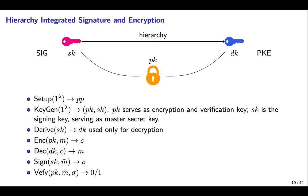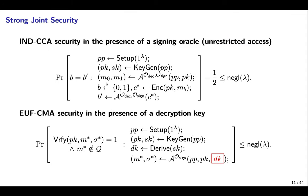In HISE, a single public key serves as both verification and encryption key, while there is a hierarchy between the signing key and the decryption key. The signing key serves as the master secret key and can derive the decryption key used only for decryption in a one-way manner. As to security, we require strong joint security: the IND-CCA security for the PKE component remains even in the presence of a signing oracle, while the UF-CMA security for the signature component remains even if the adversary gets to see the entire decryption key rather than merely access to a decryption oracle.